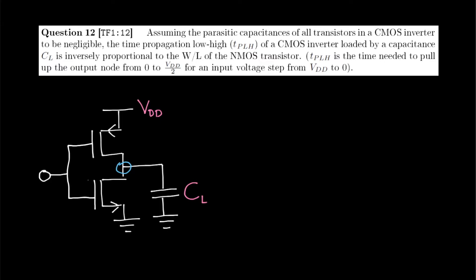When this inverter is in a low state, the NMOS transistor is conducting and the PMOS transistor is in cutoff mode. When we make the transition from VDD to 0 at the input node, the NMOS transistor will enter the cutoff region and the PMOS transistor will start to conduct current.